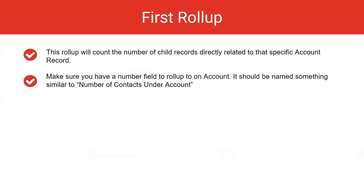The first rollup will be a standard count rollup. This rollup will count the number of child records directly related to that specific account record. Make sure you have a number field to roll up to on account — it should be named something similar to 'Number of Contacts Under Account.' Let's go into Rollup Helper to create this rollup.